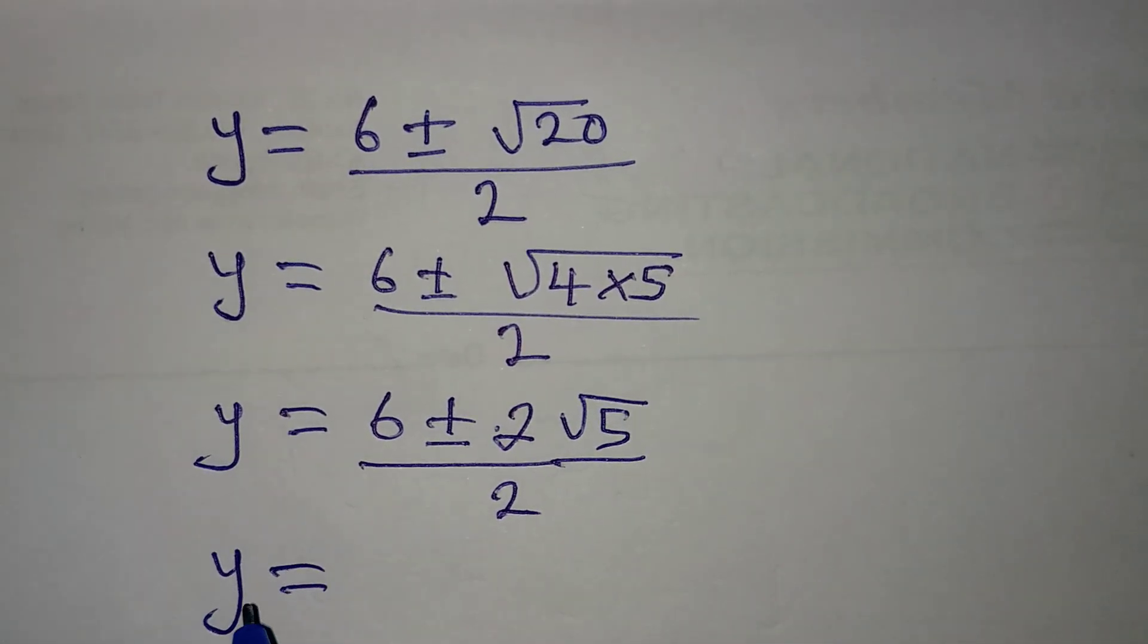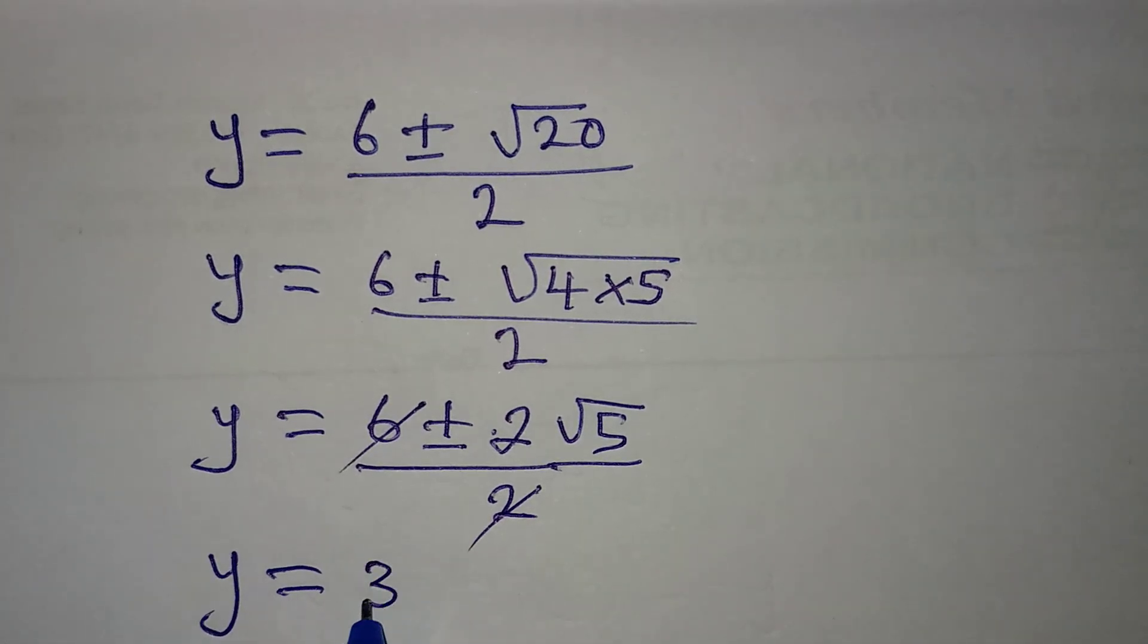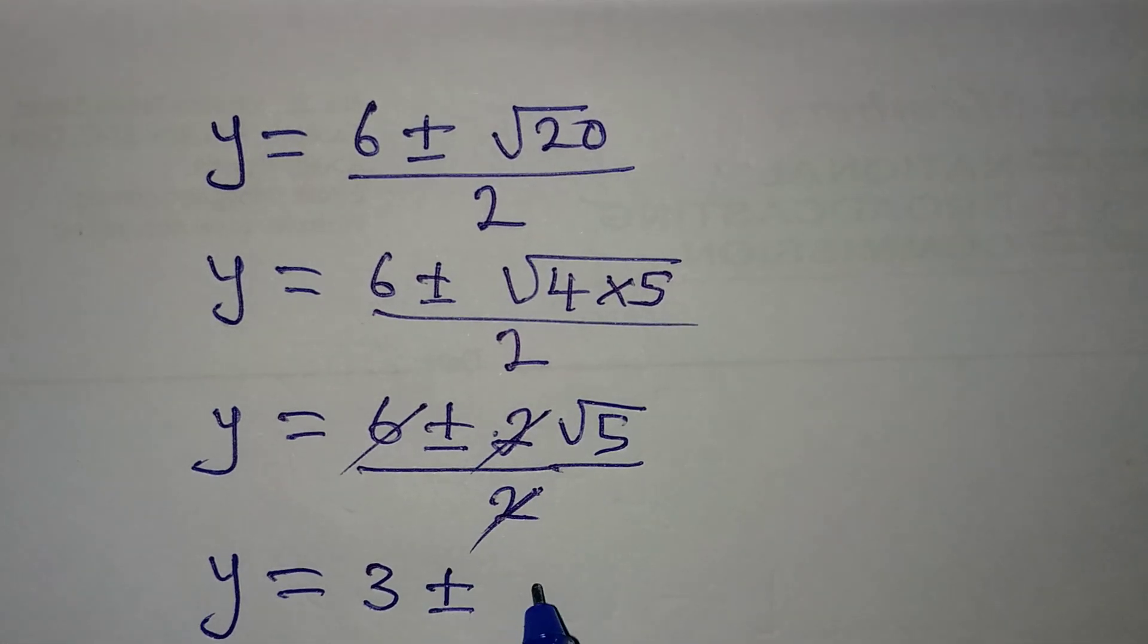Now let's continue. y will be equal to, the 2 can go there so that we have 3, then ± the 2 again will go there and we'll have just √5.